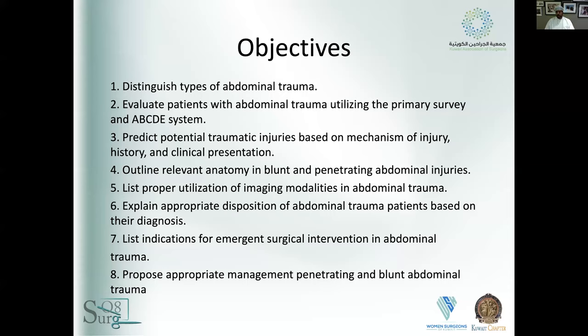You'll be able to predict potential traumatic injuries based on the mechanism of injury, the history, and the clinical presentation. We'll outline relevant anatomy and differentiate between blunt and penetrating injuries, list proper utilization of imaging modalities, explain appropriate disposition of abdominal trauma patients, list indications for emergent surgical intervention, and propose appropriate management in penetrating and blunt abdominal trauma.